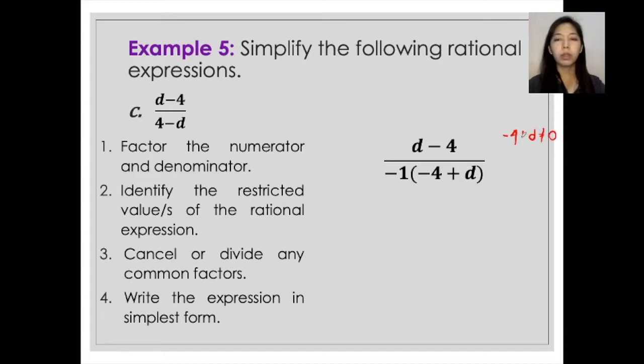apply addition property of equality. So add positive 4 to both sides. This would give us d is not equal to positive 4. And that would give us the restricted value.